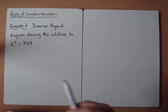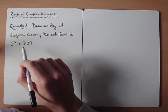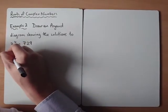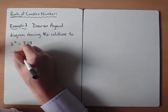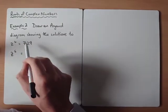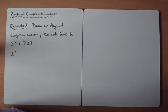Example 2 says, draw an Argand diagram showing the solutions to z to the 6 equals 729. Now for this first one, we're essentially looking for 6 solutions, aren't we? Because when we take the 6th root, we're going to represent 6 solutions.